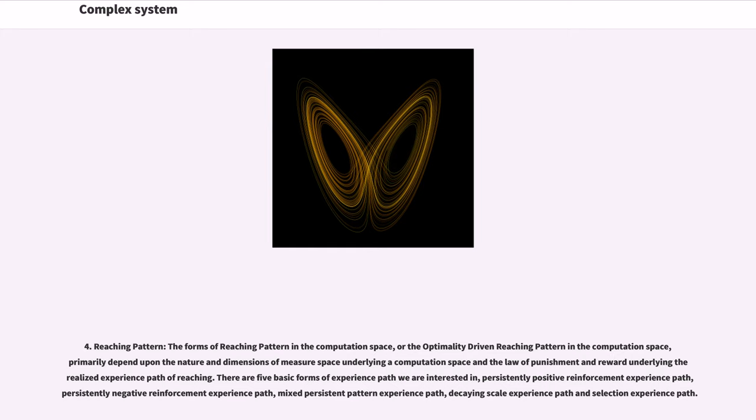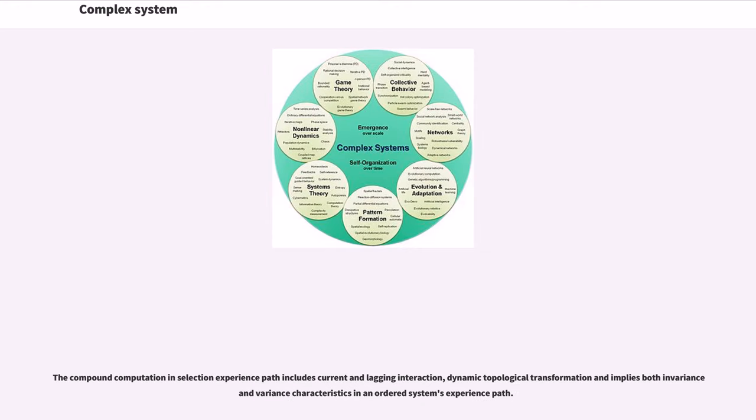There are five basic forms of experience path we are interested in: persistently positive reinforcement experience path, persistently negative reinforcement experience path, mixed persistent pattern experience path, decaying scale experience path and selection experience path. The compound computation in selection experience path includes current and lagging interaction, dynamic topological transformation and implies both invariance and variance characteristics in an ordered system's experience path.